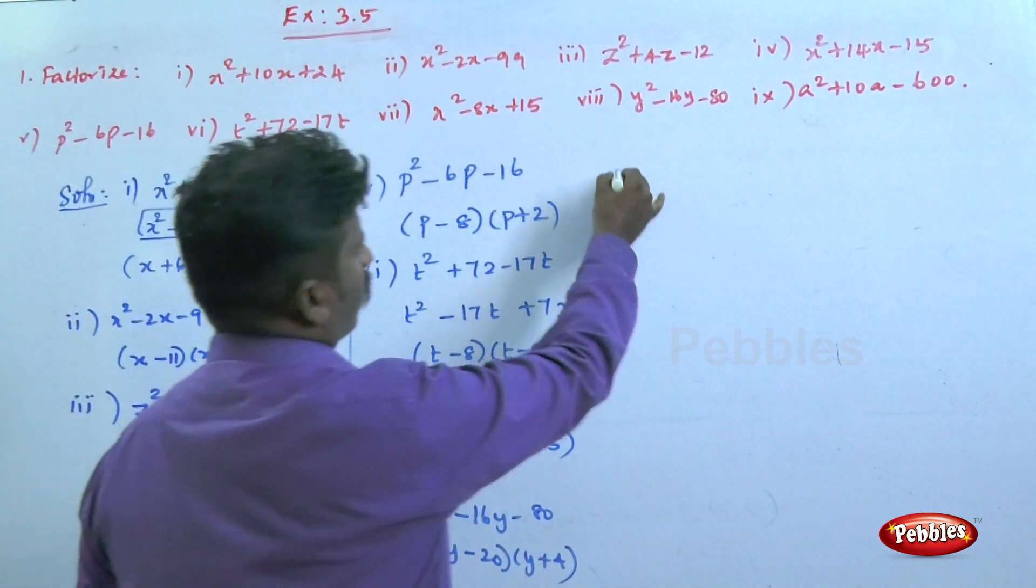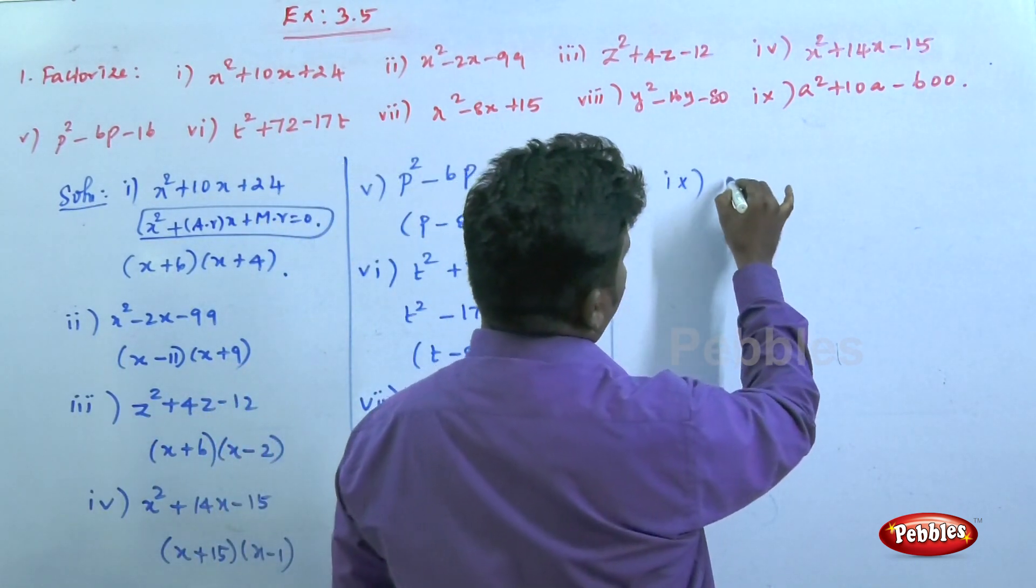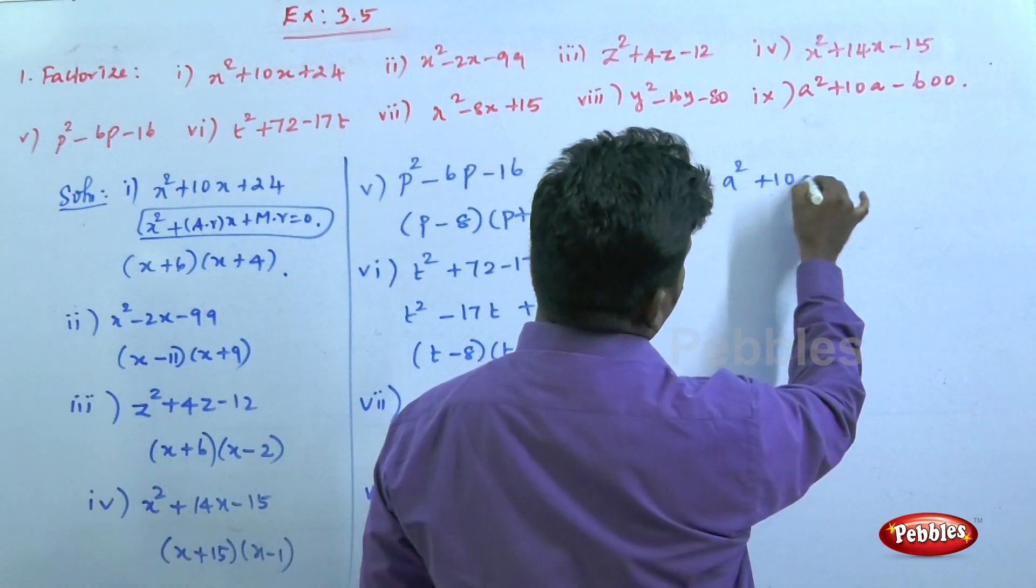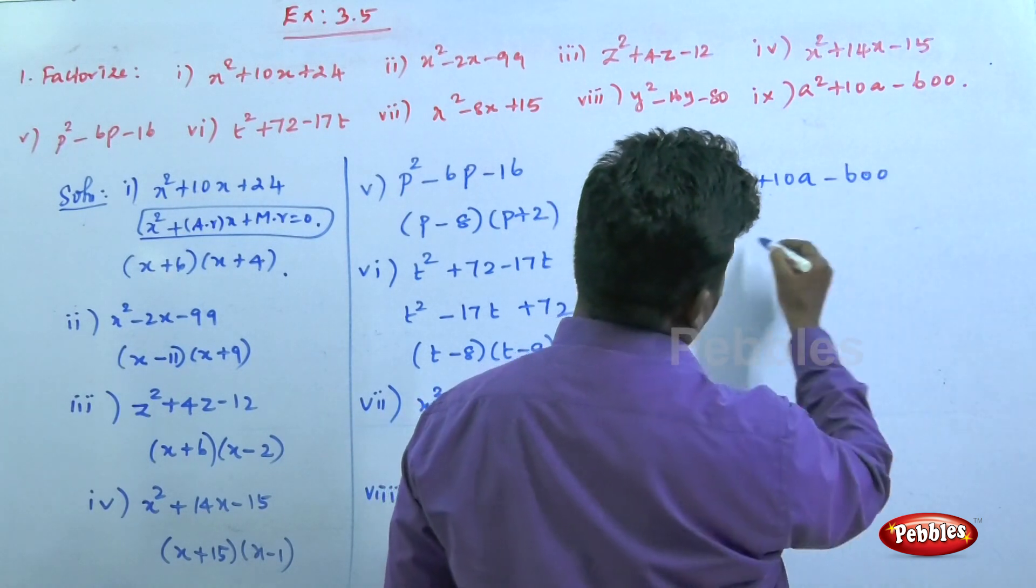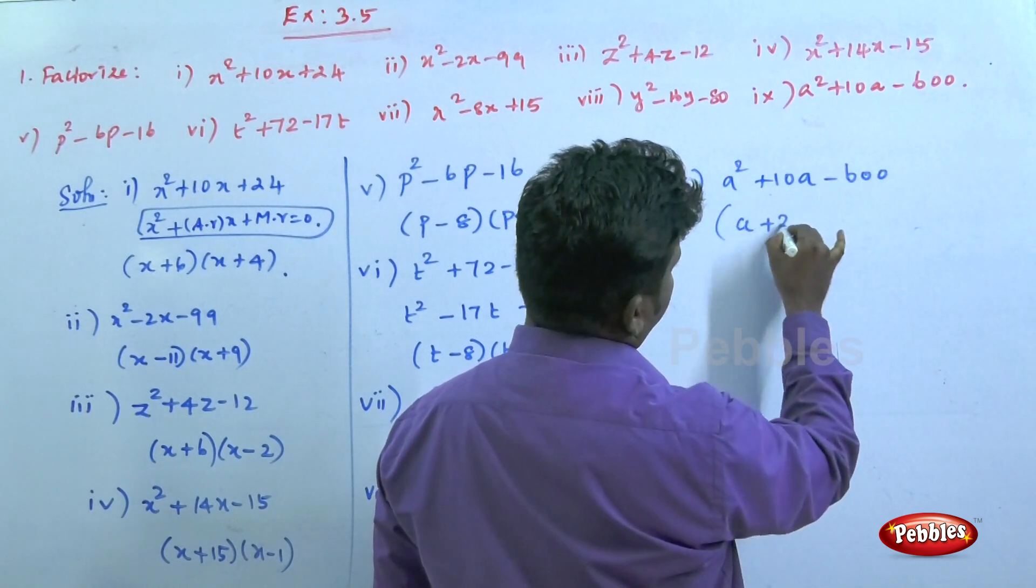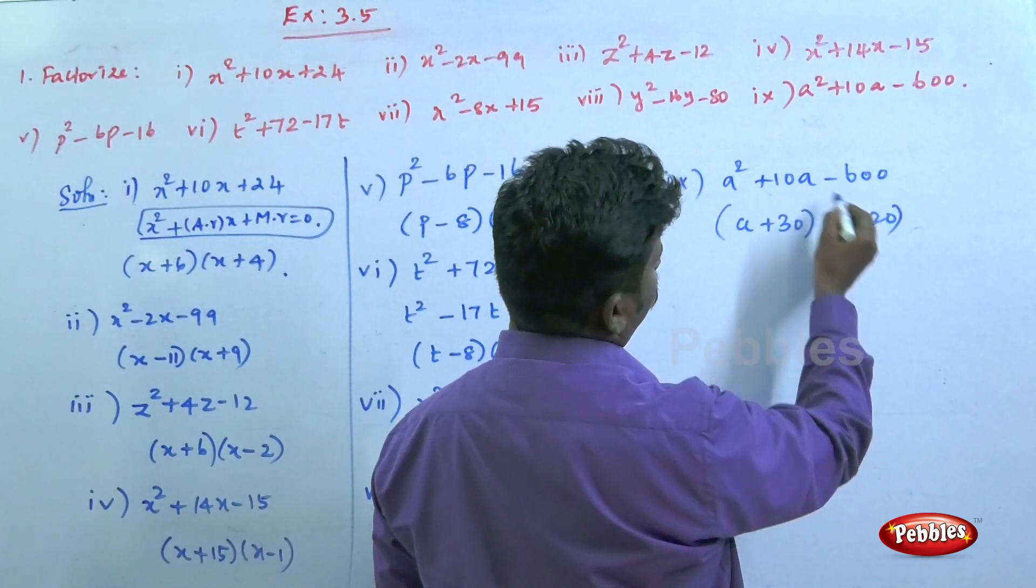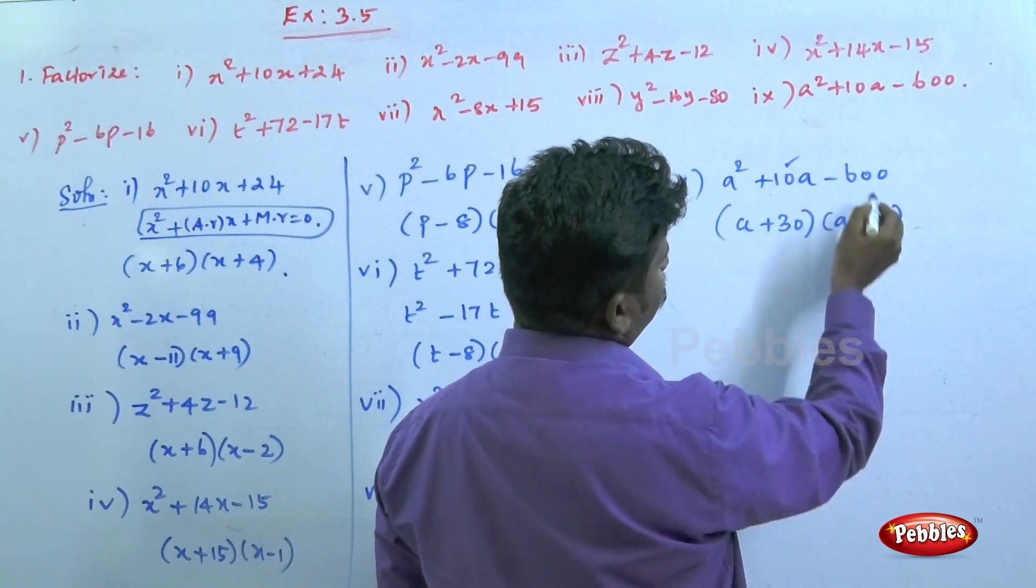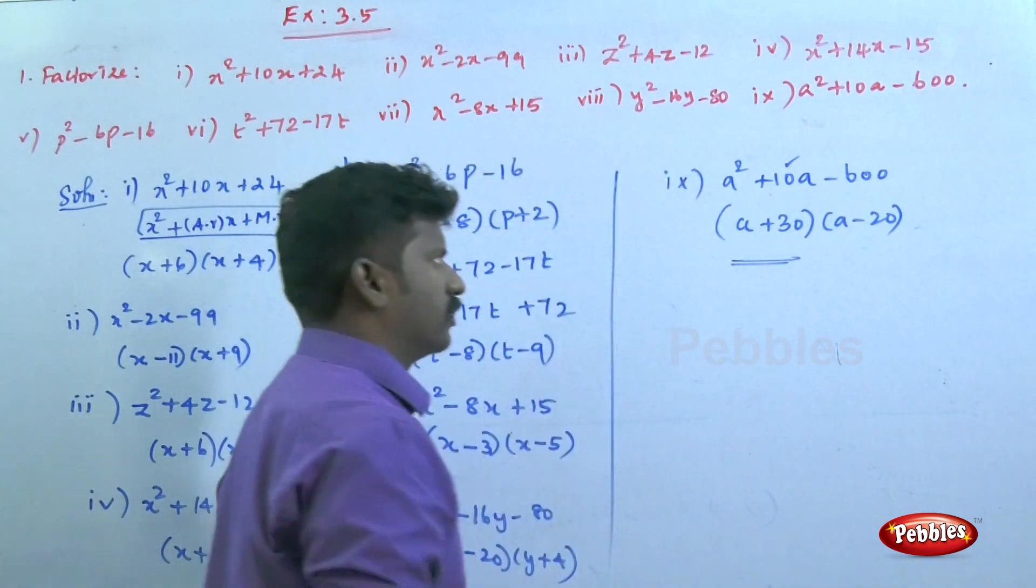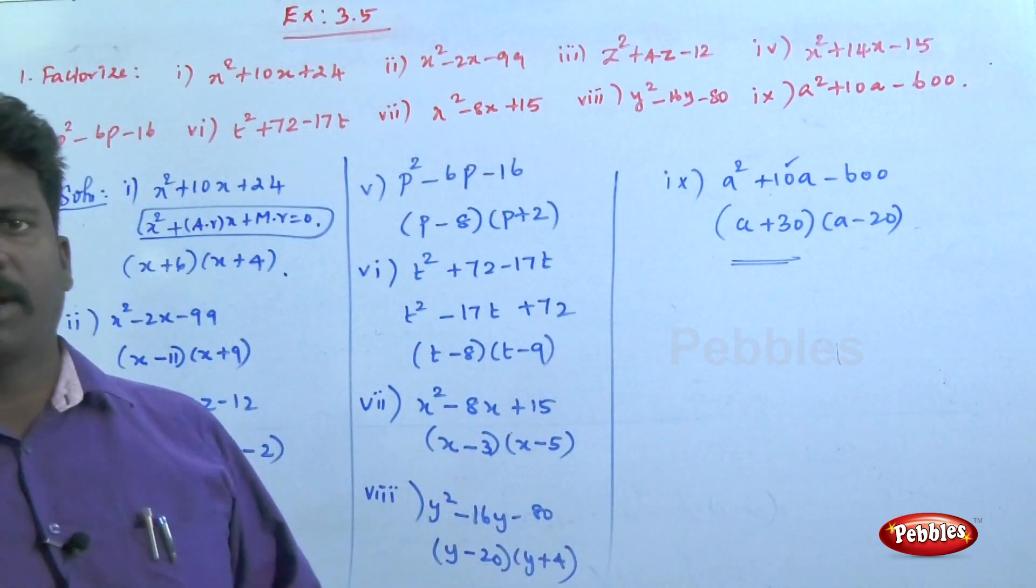The ninth one: a² + 10a - 600. This can be written as (a + 30)(a - 20). 30 - 20 = 10, 30 × -20 = -600. These are the factors for the ninth question.